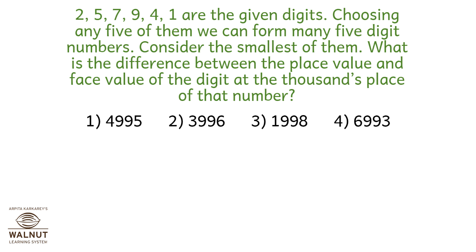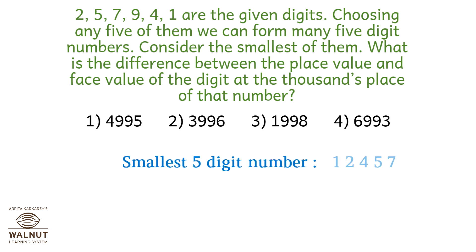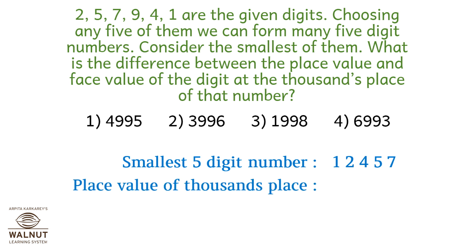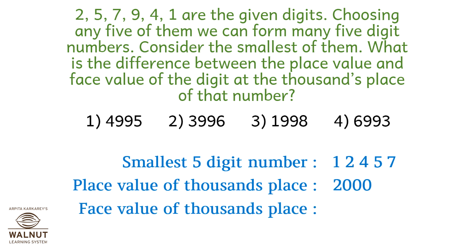From digits 2, 5, 7, 9, 4, 1 — choosing any 5 — consider the smallest 5-digit number. What is the difference between the place value and face value of the digit at the thousands place? Smallest 5-digit number: 1, 2, 4, 5, 7. Place value of the thousands place digit (2) is 2,000. Face value is 2. Difference is 1,998. Option 3.